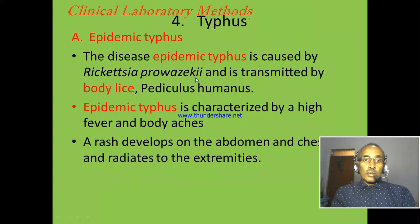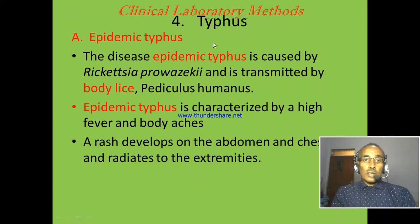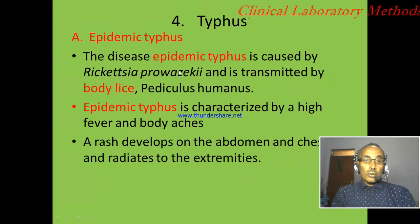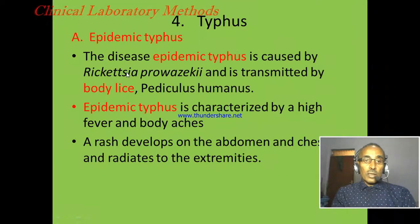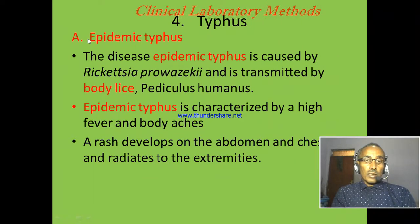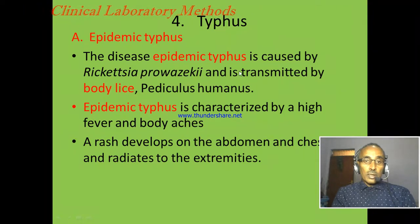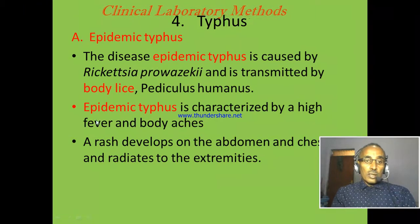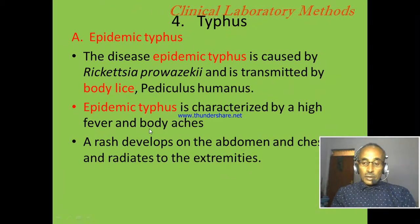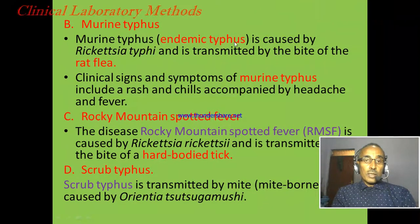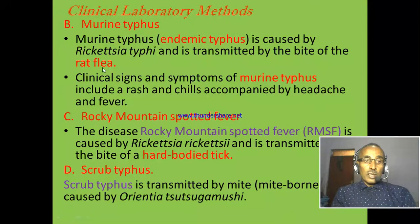The other disease diagnosed by serological techniques is typhus, caused by rickettsial microorganisms. These rickettsial pathogens are obligate intracellular, like viruses. Based on species differences, there are different typhus infections. The first is epidemic typhus, caused by Rickettsia prowazekii and transmitted by body lice, characterized by high fever and body ache. The second is murine typhus, also called endemic typhus, caused by Rickettsia typhi and transmitted by rat flea.